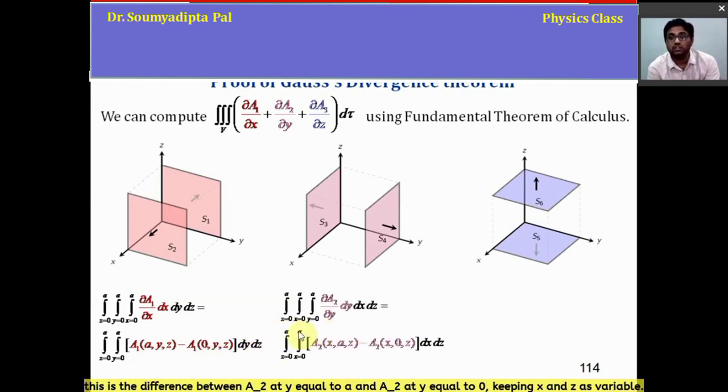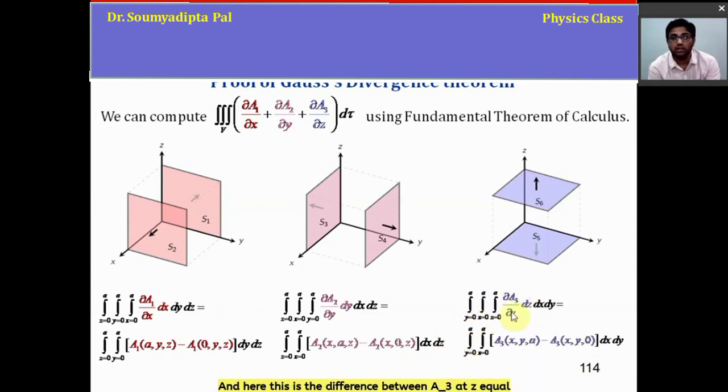here this is the difference between A2 at Y equal to A and A2 at Y equal to 0, keeping X and Z as variable.